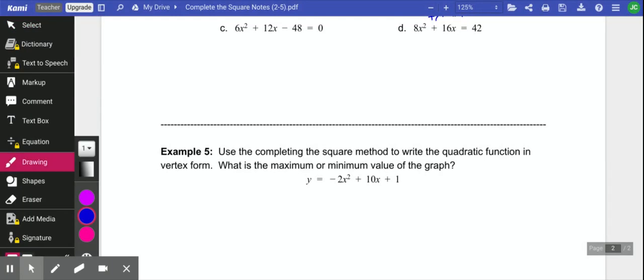Now, c and d have a little bit more complexity that we need to talk about, but they're going to start out the same. So we're going to start by moving our constant term over. So we get 6x squared plus 12x equals 48.